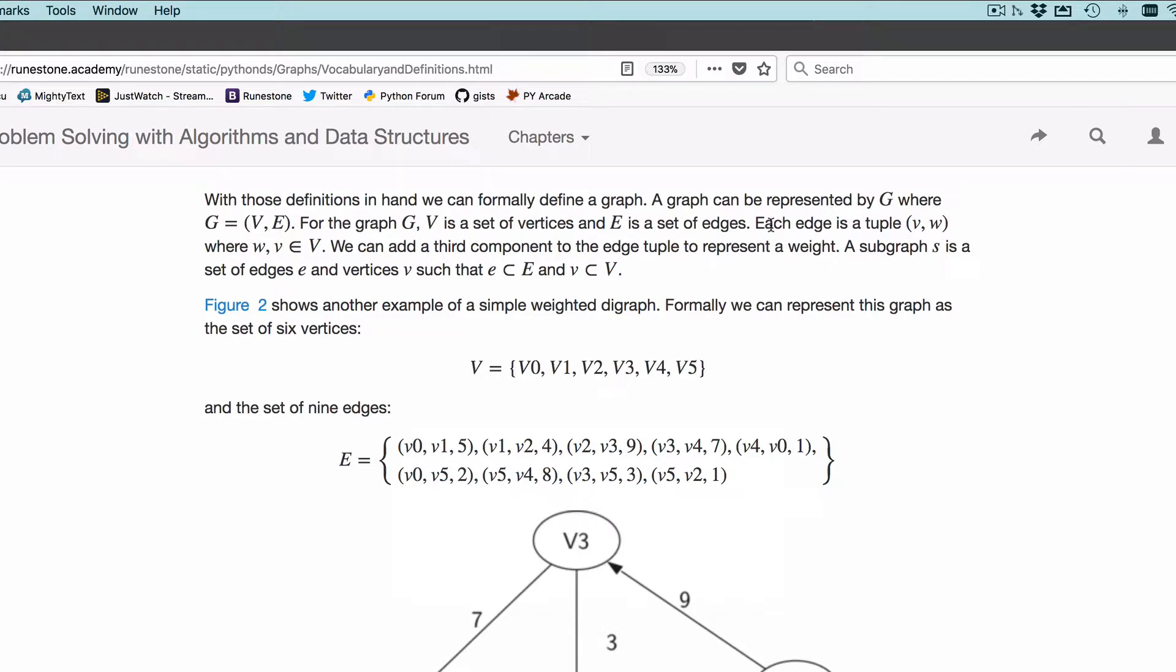Each edge is a pair of vertices representing a connection between V and W. So each edge is a tuple (V, W), where V and W are in the set of vertices. That means V and W are in the list of vertices for the graph. We wouldn't have an edge that mentions a vertex that's not in our graph.